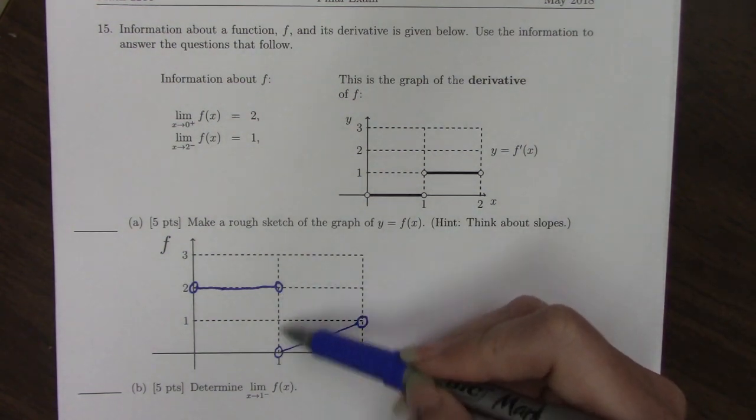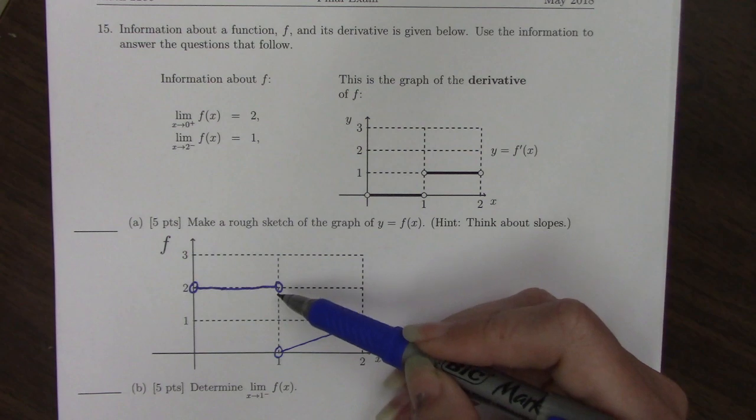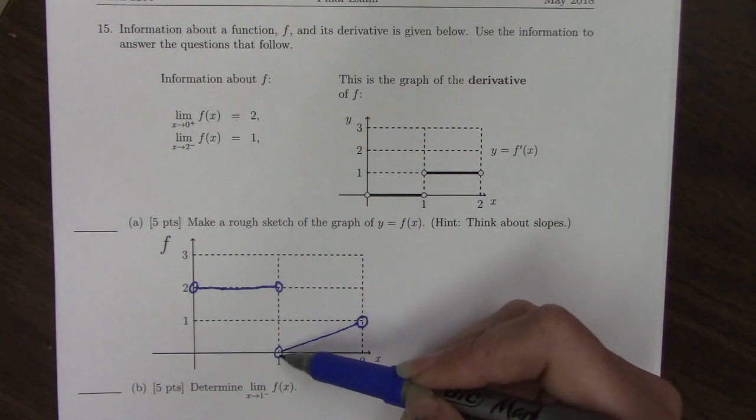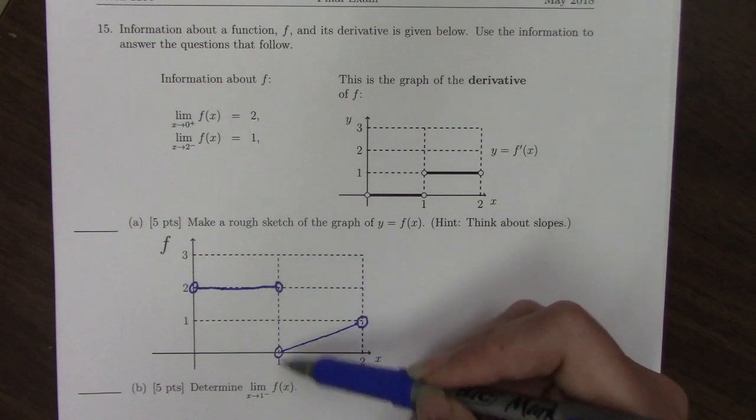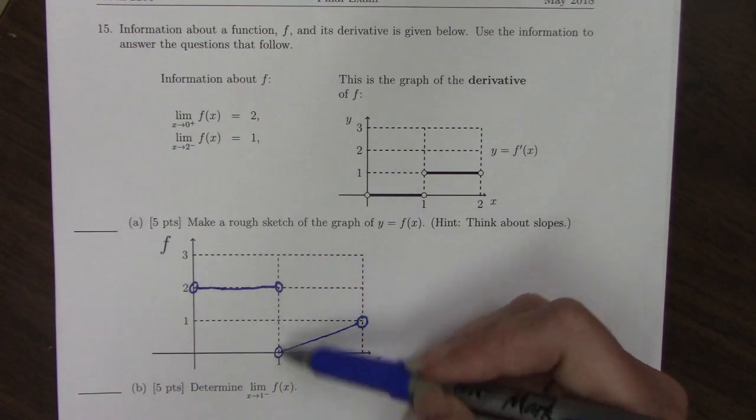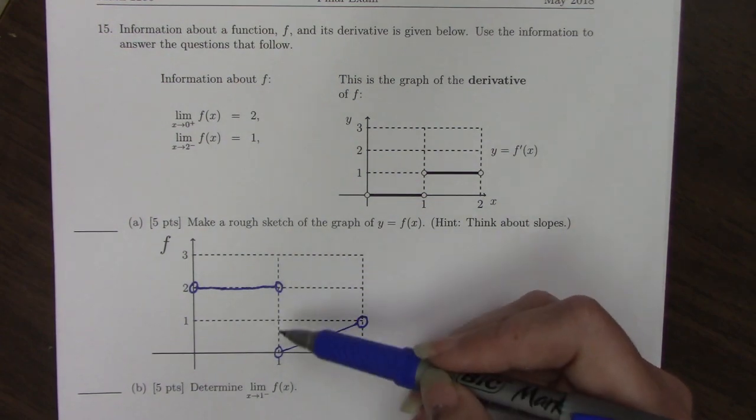We can see here we actually have a jump discontinuity. It's possible on the original graph that this is closed in or this is closed in, because we weren't given any information about the graph at 1. If you're not given anything, it's perfectly okay to assume that the function just doesn't exist.